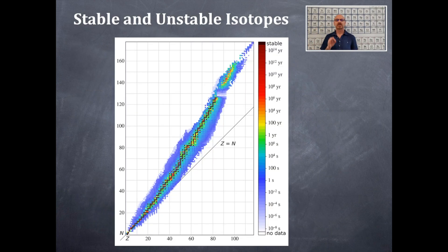Bam! So, look at this beautiful graphic here. I love this graphic. Z equals N. Do you see that black thin line there? Z is the atomic number. N is the number of neutrons. And then this deals with stable and unstable isotopes here.